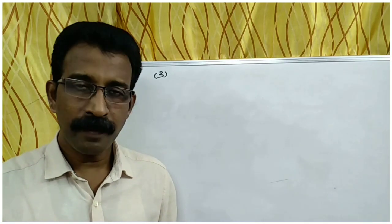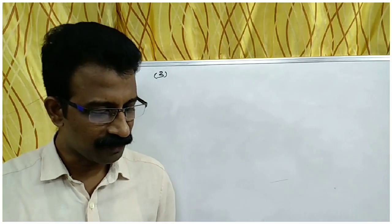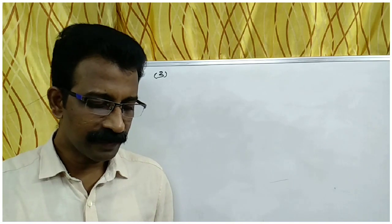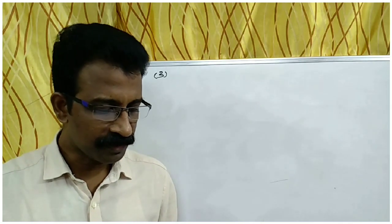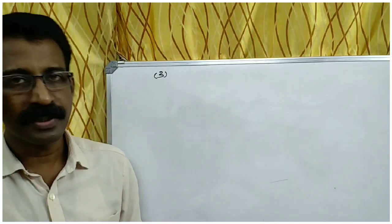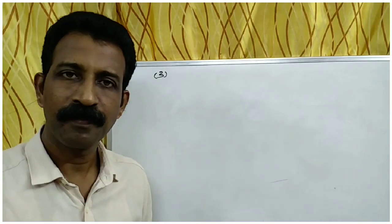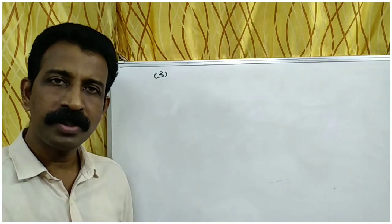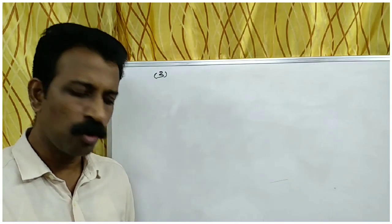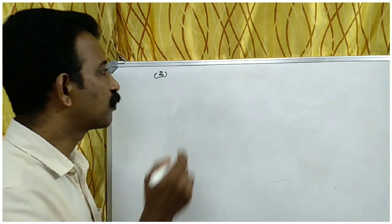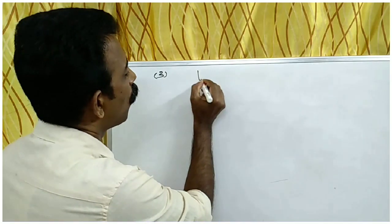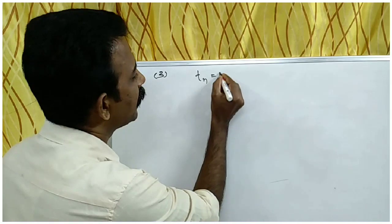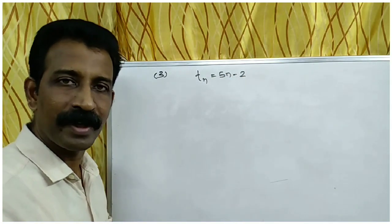The third question: the algebraic form of an arithmetic sequence is 5N minus 2. Part A: what is the common difference? Part B: write the first term. Part C: what is the 20th term? Part D: find the sum of the first 20 terms. The algebraic form is TN equals 5N minus 2.